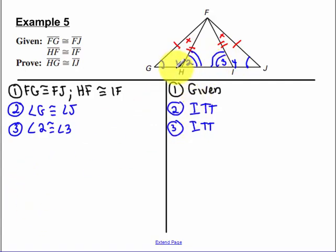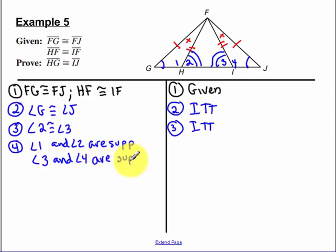Now, 1 and 2 are supplementary. 3 and 4 are supplementary because they form a linear pair. Remember our reason in proofs, 1 and 2 are supplementary, so I can state that they are supplementary. And angle 3 and angle 4 are supplementary.